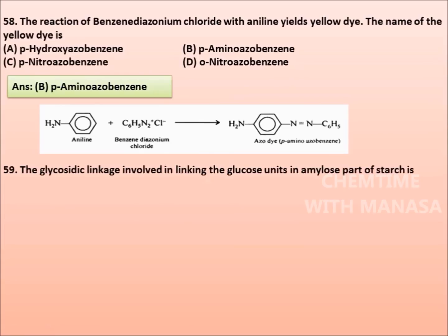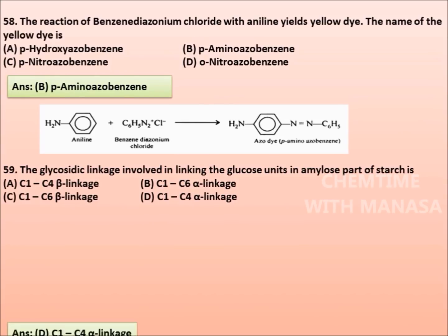Question 59: The glycosidic linkage involved in linking the glucose units in amylose part of starch is C1-C4 beta linkage, C1-C6 alpha linkage, C1-C6 beta linkage, or C1-C4 alpha linkage. And the correct answer is option D, C1-C4 alpha linkage.